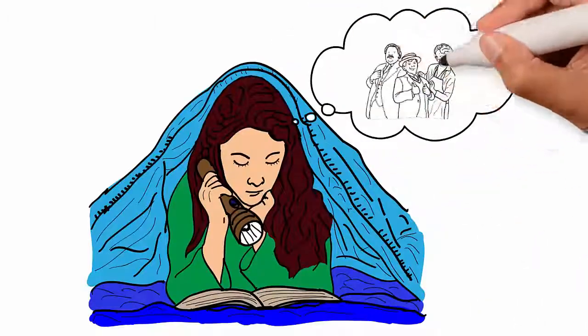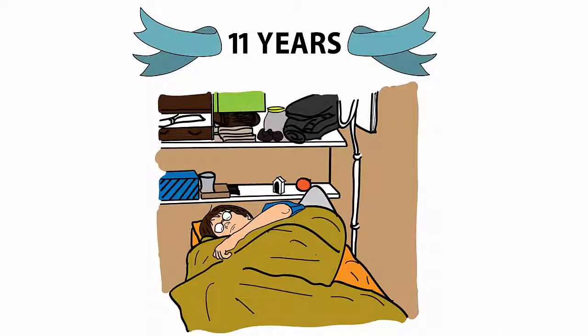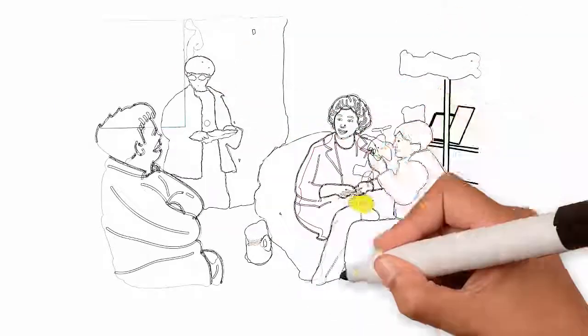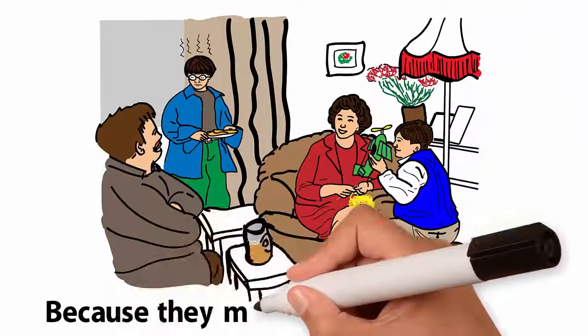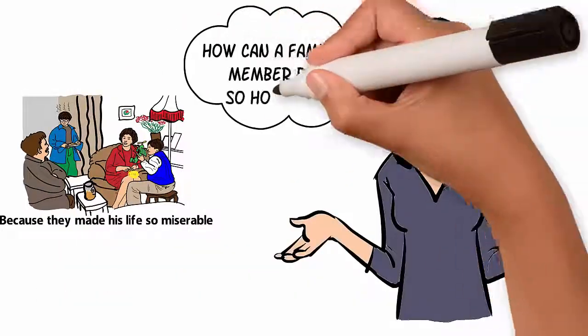Did you ever wonder how the Dursleys could be so mean? Not only did they make an orphaned child sleep in a closet for 11 years, but they underfed Harry, put bars on his window, and abused him for his entire childhood. He dreaded spending time with them because they made his life so miserable. How can a family member be so horrific?